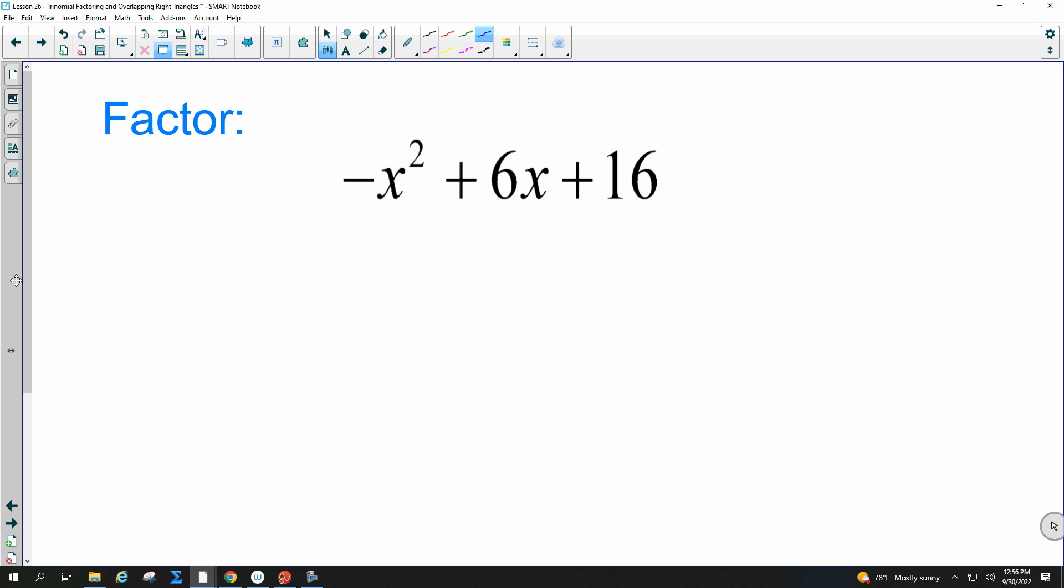So you factor out a negative 1 from every single term. So the negative comes out and it changes all the signs. So I take it out of the x squared and I get a positive. I take it out of this positive 6x, so I get a negative. And I take it out of this positive here, so I get a negative.